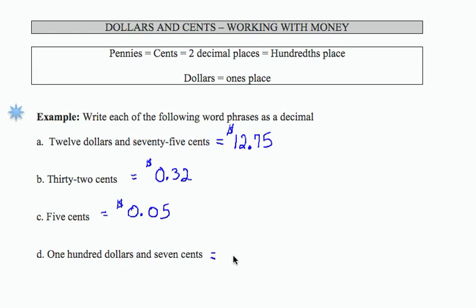One hundred dollars and seven cents would be $100.07.